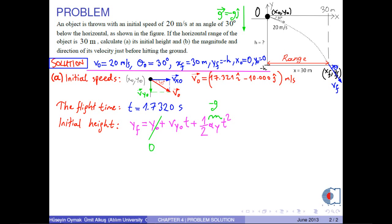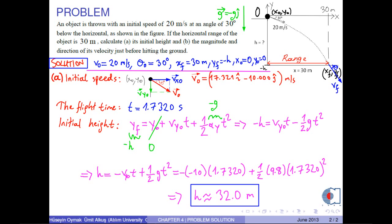And noting that yf equals minus h, we have... Therefore, we obtain an expression for h as... If we substitute the corresponding numerical values into this equation, then we obtain the initial height as approximately 32 meters.